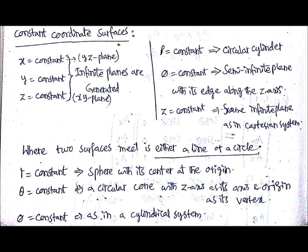What is meant by constant coordinate surfaces? If one variable is constant — for example, if x equals a constant, that will be in the yz plane, meaning x is constant in the yz plane. Similarly, if y equals a constant it will be the xz plane, and if z equals a constant it will be the xy plane.